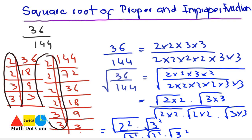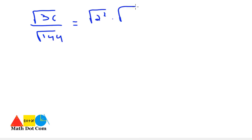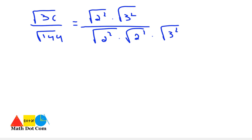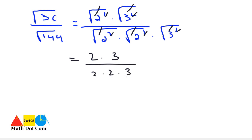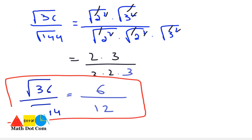In the next step, we write √36 over √144 equals √(2²) · √(3²) over √(2²) · √(2²) · √(3²). The square and square root cancel out, leaving 2 · 3 divided by 2 · 2 · 3. Multiplying together gives us 6 over 12. So the square root of 36 over 144 is 6/12. The same method applies to improper fractions.